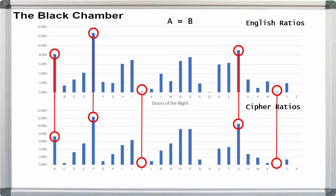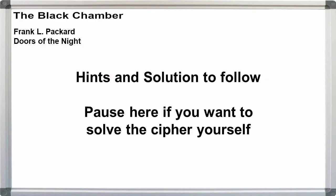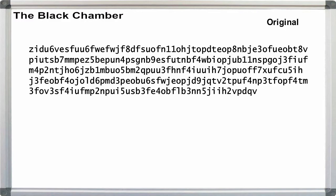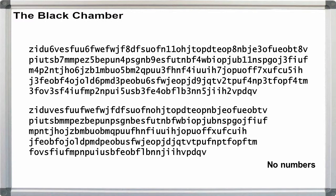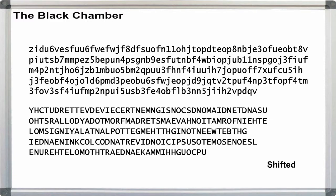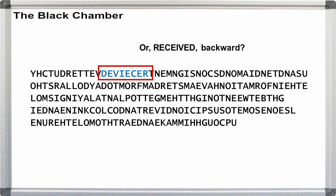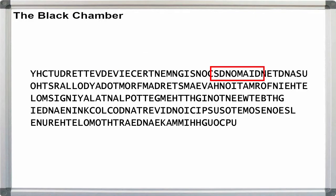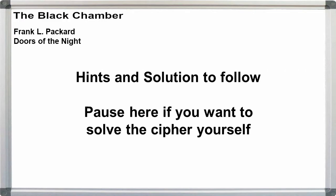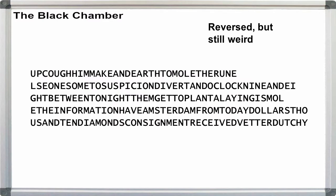What happens if we Caesar shift the cipher so that A is equal to B? Pause here if you want to try solving the cipher on your own. First, strip out the numbers, then do the Caesar shift on the text. We get what looks like an unreadable mess, but just look over the text loosely. Your eye may catch on something that initially reads like 'device,' but can also be read backwards as 'received.' Additionally, we can find 'diamonds' and 'between.' Pause here if you want to try solving this cipher on your own now.